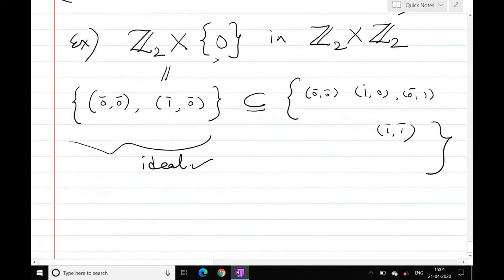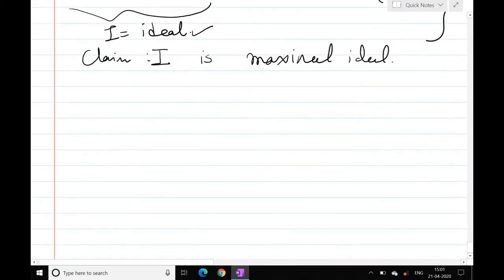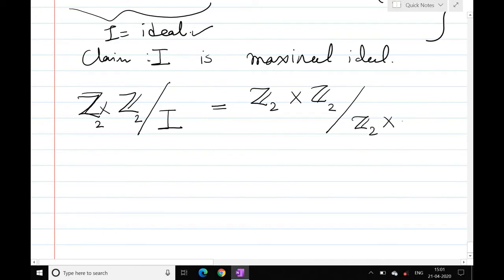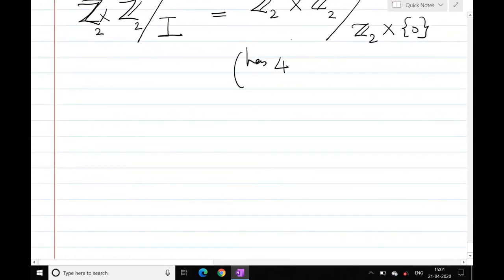I want to say that this ideal I is an ideal. Now then I want to take Z2 cross Z2 quotient by I, which is Z2 quotient {0}. How many elements does this have? This has 4 elements, this has 2 elements, so it has 4 upon 2 is 2 elements.